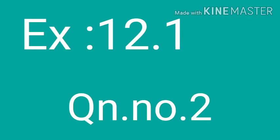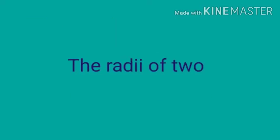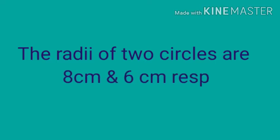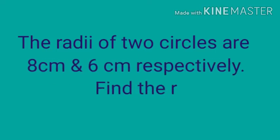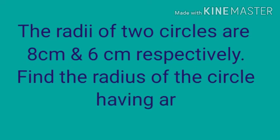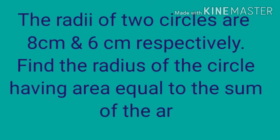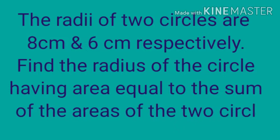Now, Exercise 12.1, Question number 2. The radii of two circles are 8 cm and 6 cm respectively. Find the radius of the circle having area equal to the sum of the areas of the two circles. In the last question it was circumference, but in this question area equals the sum of the areas of the two circles.